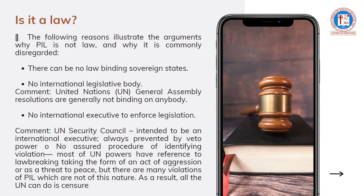United Nations General Assembly resolutions are generally not binding. The General Assembly is the only organ in the United Nations in which all members have the right to speak, discuss, and vote on decisions. However, these resolutions do not have binding effect — they must undergo the screening or approval of the Security Council, which is the most potent organ in the United Nations, before they can be implemented on behalf of the UN.